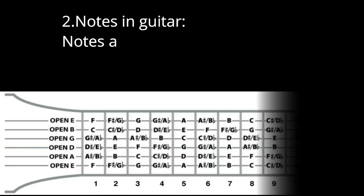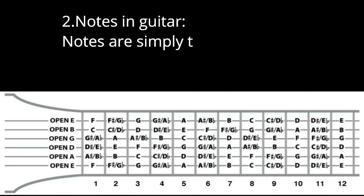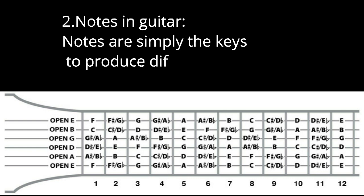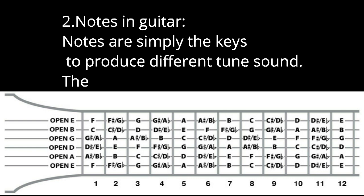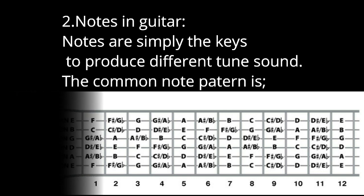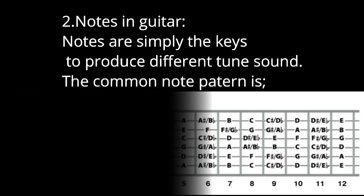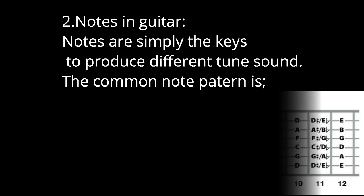About the notes — each string has different kinds of notes, and that hash sign or small B sign indicates that these are the sharp note or flat note.